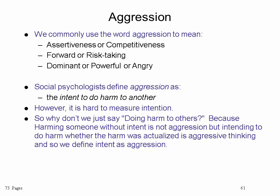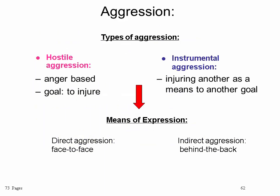How do we define aggression? We commonly use the word aggression to mean assertiveness, competitiveness, forward or risk-taking behavior, or dominant, powerful, or angry people. Some psychologists define aggression as the intent to do harm to another person. However, it's very hard to measure intention — in most trials, the biggest problem is to prove the intention of the person on trial.